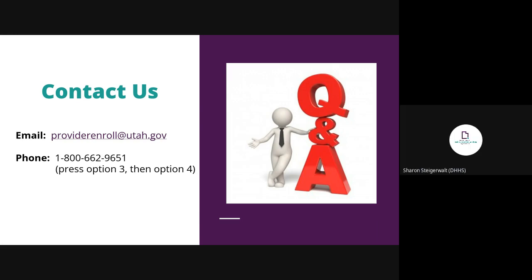The next question is: we have issues with patients not knowing which managed care plan they have. How can we let them know which plan they are on? When a member is enrolled with Medicaid, they get a letter stating which managed care plans they're with for the PMHP, and they'll need to call the HPR line to select a physical health or UMIC plan. If they forget, they can call the healthcare representative line and we would look it up for them. We also have an eligibility lookup tool where a provider could look up their dental, behavioral health, and physical health plans.